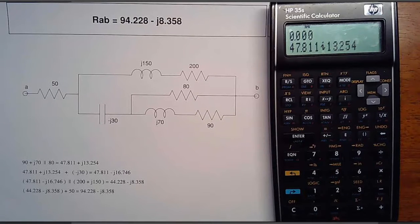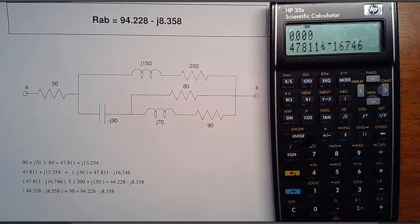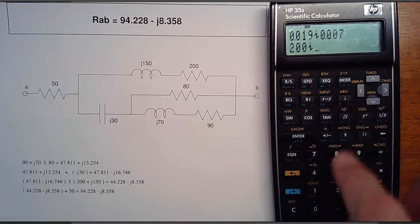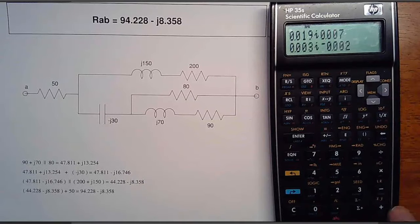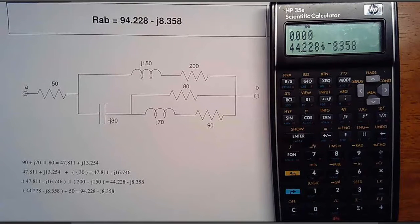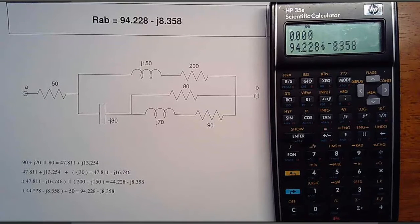Those together give you 47 plus J13 ohms. In series with minus J30, it gives you 47 minus J16 ohms. That's in parallel with 200 plus J150, so 1 over R1, 200 plus J150, 1 over R2, add them together. Together gives you 44 minus J8 ohms. In series with 50, it gives you 94.228 minus J8.358 ohms. That's an HP calculator.